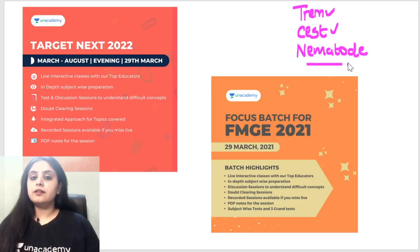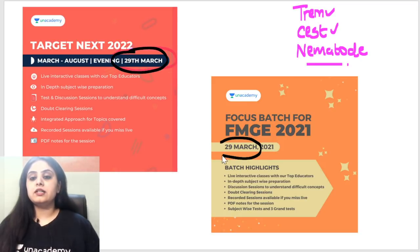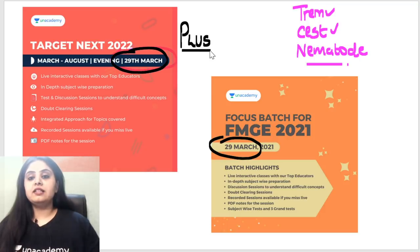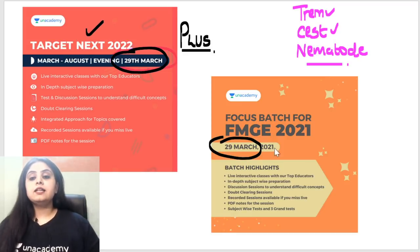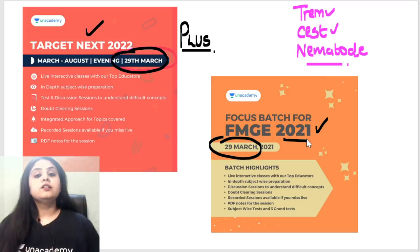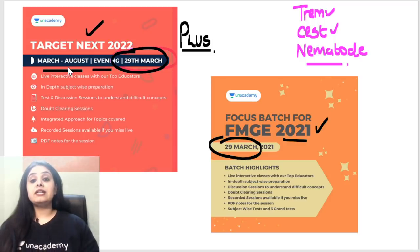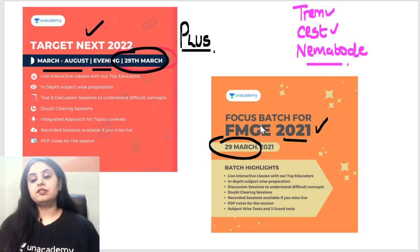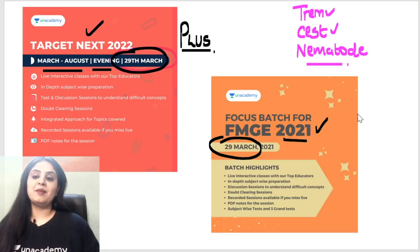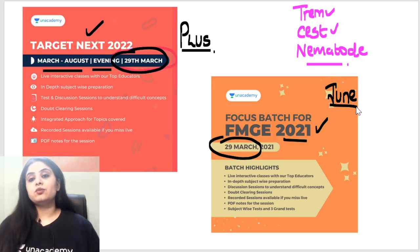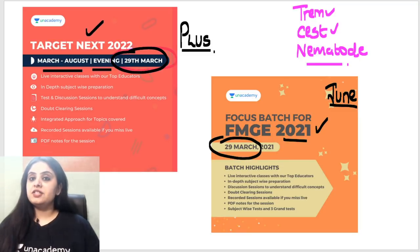Starting exactly after a day on the 29th of March, two courses are starting on the Unacademy platform as plus courses — one for the NEXT 2022 exam coming up next year, and one for students appearing this year in June, the MCI or FMG students. The NEXT exam batch runs from 29th March up till August as an evening session, and the FMG batch will wrap up earlier since the exam falls in June. You can log into the app to see the subscription plans.